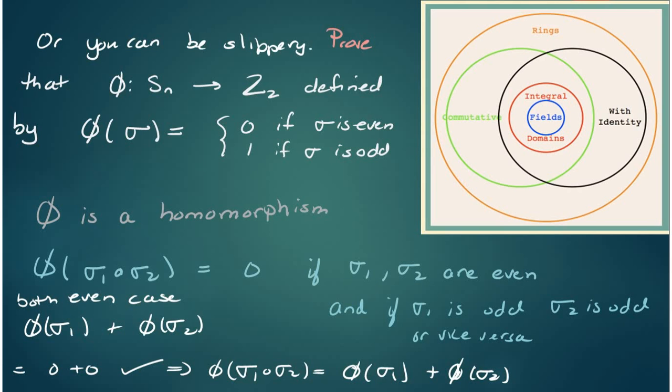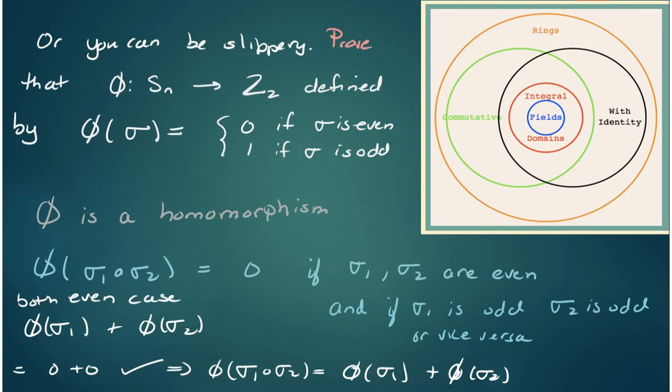Just to show you that this is true, phi of sigma 1 is 0 and phi of sigma 2 is 0. 0 plus 0 is 0, so it works. Phi of sigma 1 composed sigma 2 is going to be even inside, so it's 0. But it also, in the other case, phi sigma 1 plus phi sigma 2 is 1 plus 1, which is 0 in Z_2. And therefore, in this case as well, when they're both odd, we get phi sigma 1 composed with sigma 2 is equal to phi sigma 1 plus phi sigma 2.